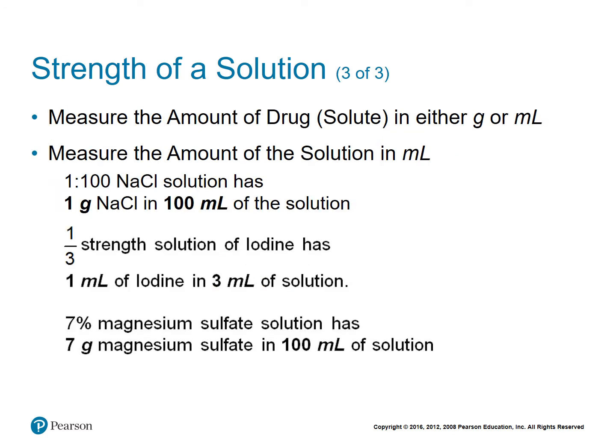When you have the strength of your solution and the units are not given, you assume that the amount of the drug — the solute — is either grams or milliliters, unless otherwise stated. So if you don't see the units, it's either grams or milliliters for the drug, and the amount of the solution is milliliters. For example, if you have a strength of one to 100 sodium chloride with no units, we assume that it's one gram of sodium chloride for every 100 milliliters of solution.